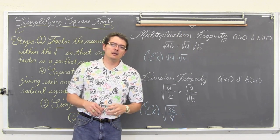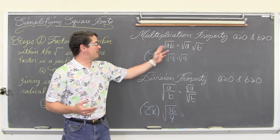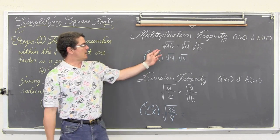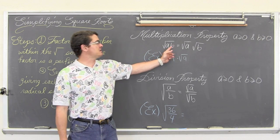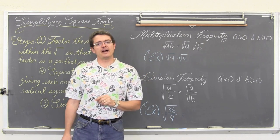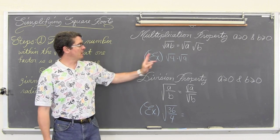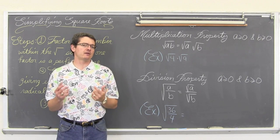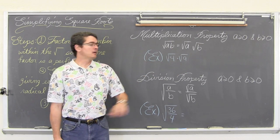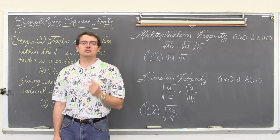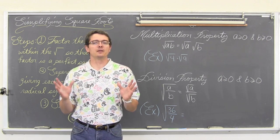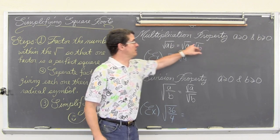The multiplication property — for when our a and b values are greater than or equal to zero, because you can't square root a negative number — says that the square root of a times b is equal to the square root of a times the square root of b. As an example, here we have the square root of four times nine. The square root of four is two, the square root of nine is three, and two times three equals six.